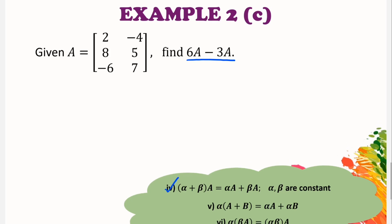But for this example, I would like to apply the properties number 4. So 6A minus 3A can also be written as 6 minus 3 times by matrix A. And the result will be 3A and it is actually the same answer on part A which is 6, negative 12, 24, 15, negative 18 and 21.